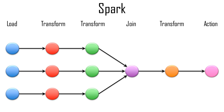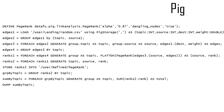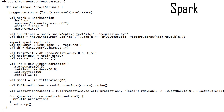MapReduce, Pig, and Spark DAGs are all created by writing computer programs. MapReduce is written in the general-purpose language Java, Pig is written in the domain-specific language Pig Latin, and Spark is written in the general-purpose language Scala.